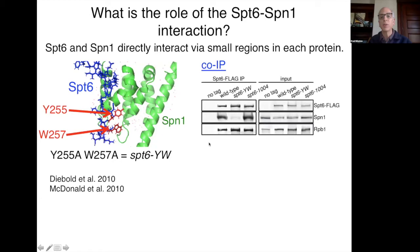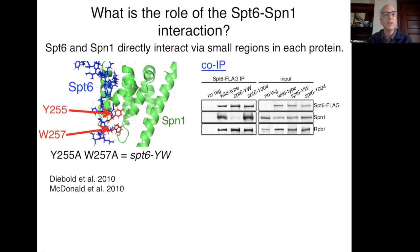Olga examined this by co-immunoprecipitation. We immunoprecipitated FLAG-tagged SPT6 and asked what happens to co-IP of Spt1 and Rpb1, the largest subunit of RNA polymerase II. In the wild-type lane, there is strong co-IP of both proteins. In the SPT6-YW mutant, Spt1 is specifically lost from the co-IP, whereas Rpb1 is not affected. Olga looked at many other proteins and showed they are all normal, confirming this mutant truly abolishes — or greatly reduces — the SPT6–Spt1 interaction.